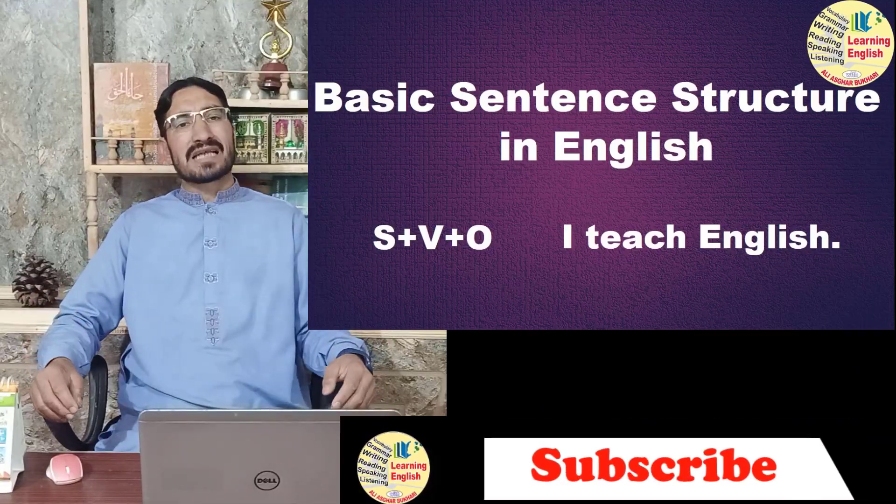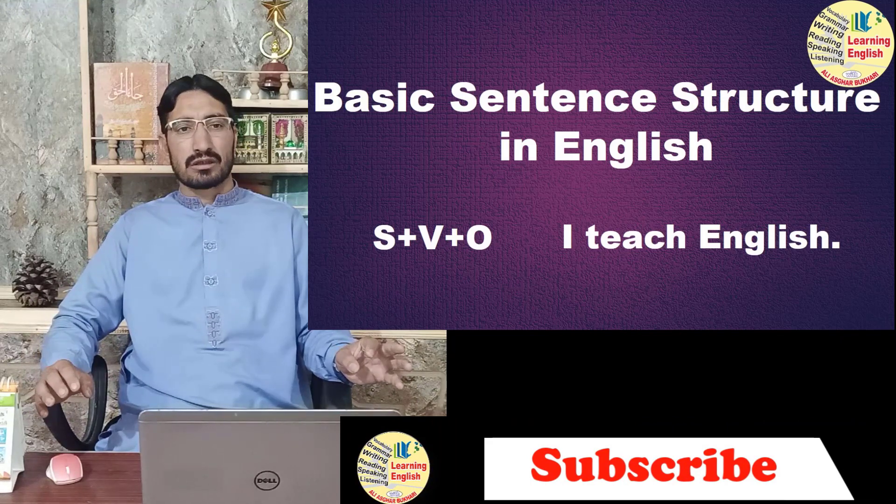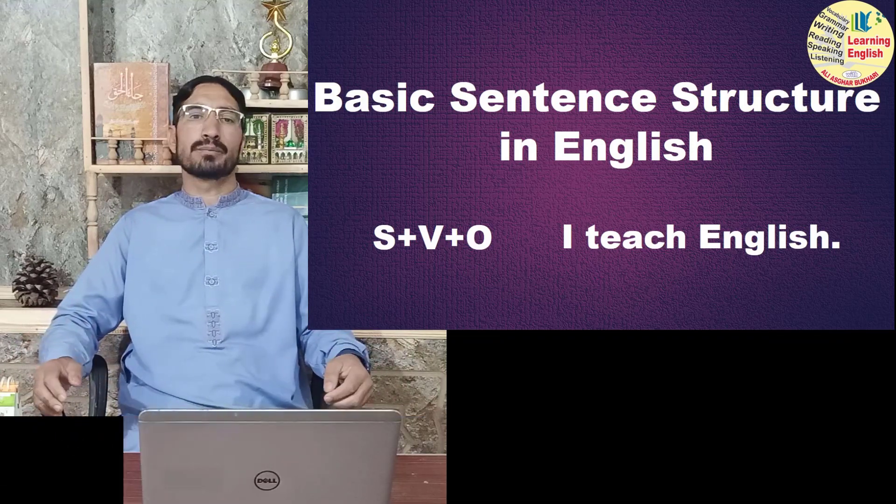Now, usually in English, an ordinary sentence has three components: Subject, Verb, and Object. This is called the SVO structure. For example, 'I teach English' — 'I' is the Subject, 'teach' is the Verb, 'English' is the Object. What a subject is, what a verb is, what an object is — this is also discussed in a separate lecture; you can visit the channel and find it there.